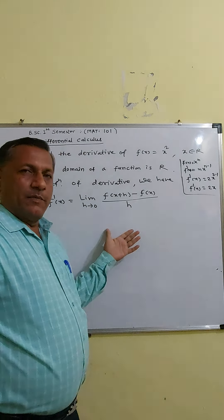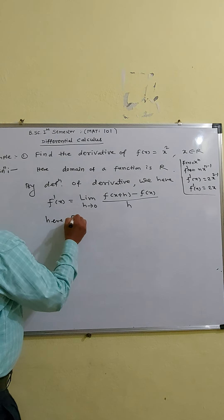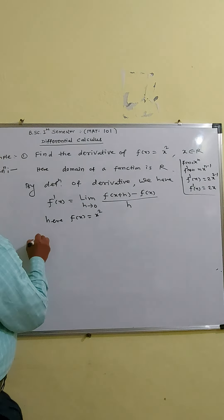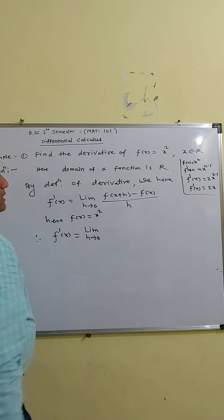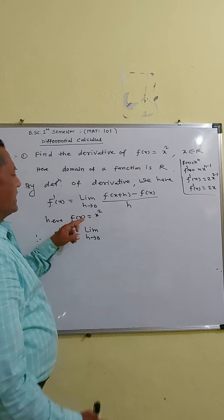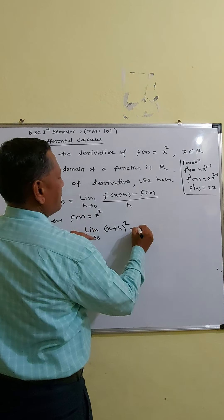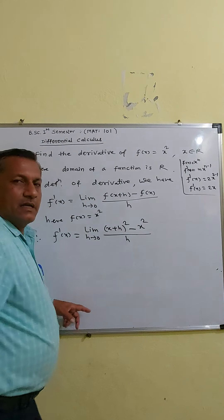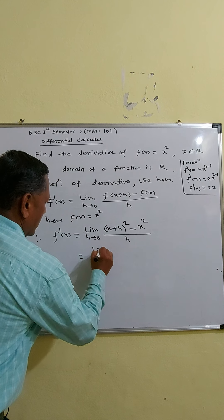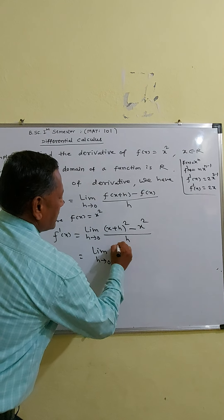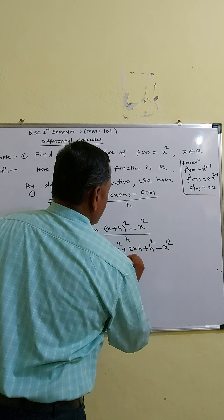But what you have to do is find the derivative of F(x) = x² using the first principle. Here F(x) = x², therefore F′(x) = lim as h tends to 0 of [F(x + h) − F(x)] / h = lim of [(x + h)² − x²] / h. Expanding (x + h)² = x² + 2xh + h², so this becomes lim of [x² + 2xh + h² − x²] / h.